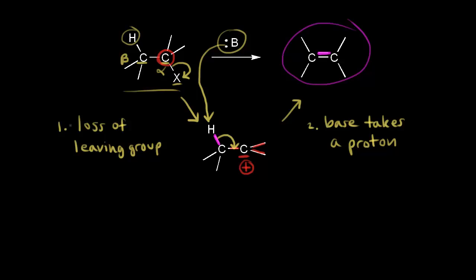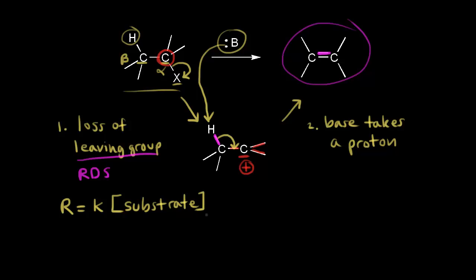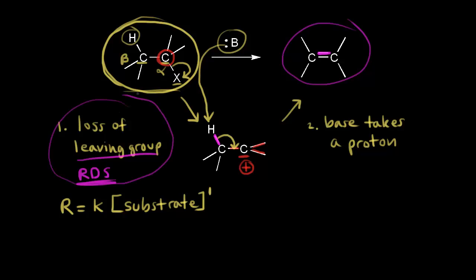The first step — loss of the leaving group — turns out to be the rate-determining step, the slow step of the mechanism. So if you're writing a rate law, the rate of this reaction equals the rate constant K times the concentration of your substrate. Studies have shown these mechanisms depend only on the concentration of your substrate. So it's first order with respect to the substrate because of this rate-determining step.